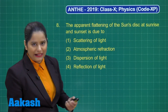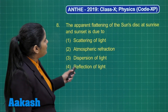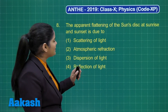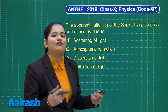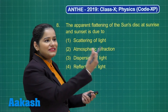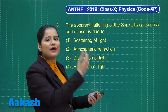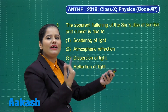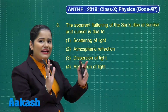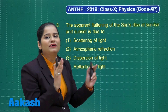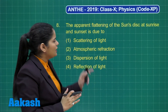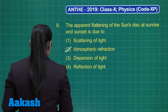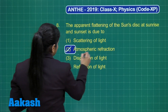Let us proceed towards question number 8. This says: apparent flattening of the sun disc at sunrise and sunset is due to — we know this is due to atmospheric refraction, because light reaching us from the vertical diameter of the sun undergoes refraction through different layers of the atmosphere, and hence when we look at the sun its shape appears distorted. So this flattening of the sun's disc is due to atmospheric refraction, and I can mark it in the box.